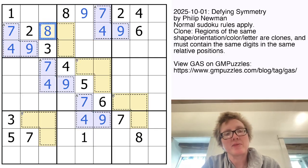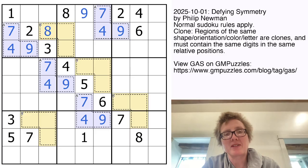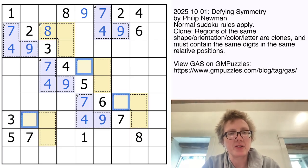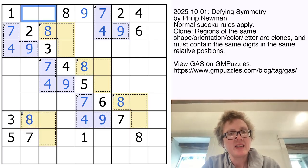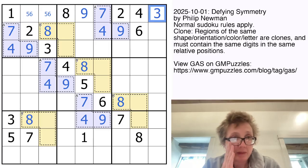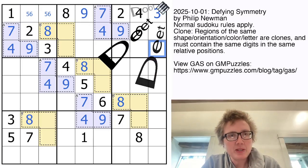Now we have a hidden eight in this region, and that hidden eight just happens to fall in the top left corner of the B clone. So we're going to fill those all in with eights. Now these have to be five and six by Sudoku, and that is going to be a three by Sudoku.